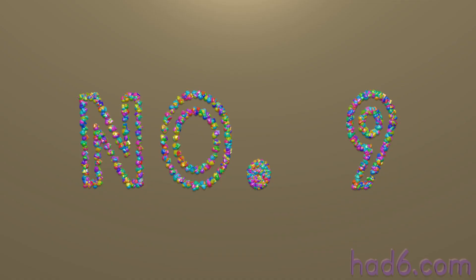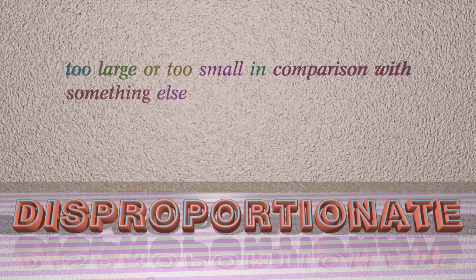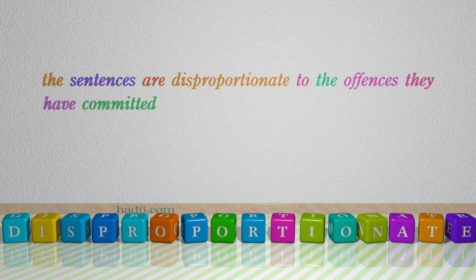Number 9: Disproportionate — which means too large or too small in comparison with something else. For example: The sentences are disproportionate to the offences they have committed.